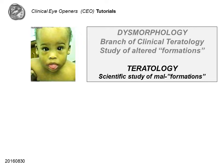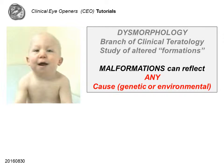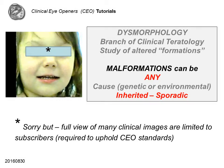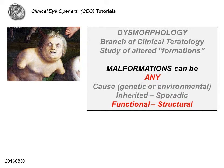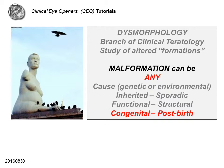What is clinical teratology? It is indeed one of the most important, but least known, clinical disciplines. Dysmorphic signs can be due to any cause — that means genetic or environmental. They can be inherited, but very often they are sporadic. They can be more often functional, but often are structural. They can be evident at birth, or they may become evident after birth. Any — that's the point.